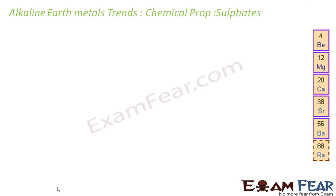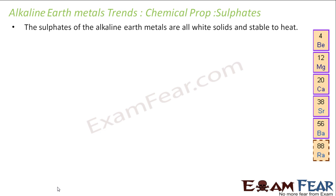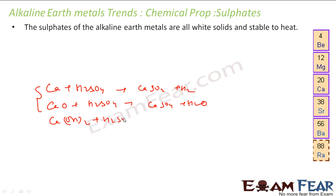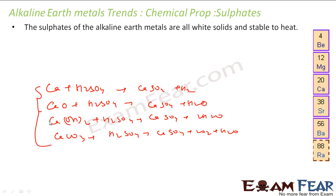Now let's talk about the properties of sulfates. The alkaline earth metal sulfates are stable white solids. They are prepared by reacting the alkaline earth metal with sulfuric acid — for example, calcium plus H₂SO₄ gives calcium sulfate and hydrogen gas. You can also react metal oxides with sulfuric acid to get calcium sulfate plus water, or metal hydroxides, or metal carbonates with sulfuric acid — which gives calcium sulfate plus CO₂.